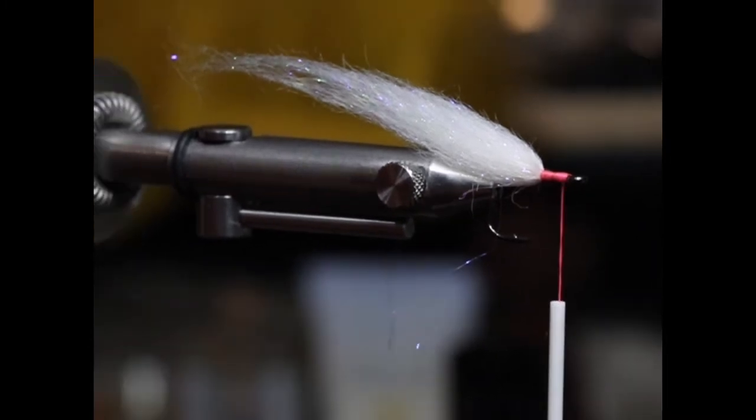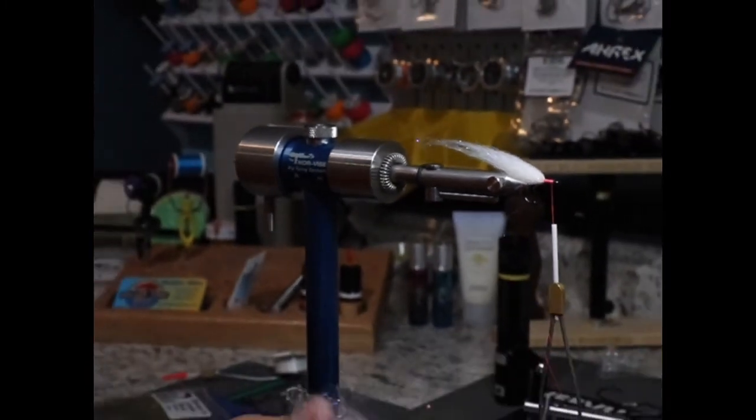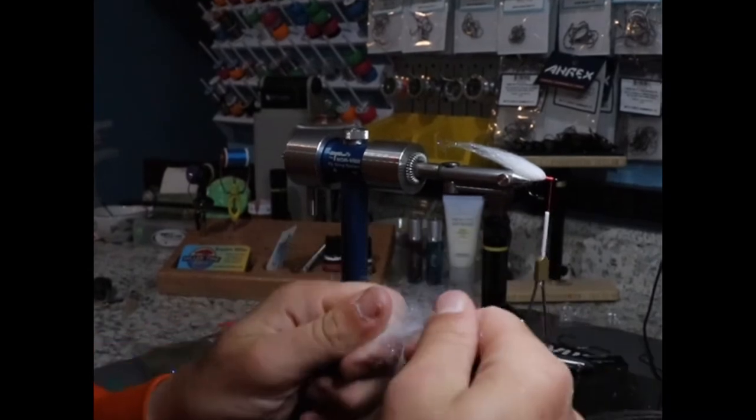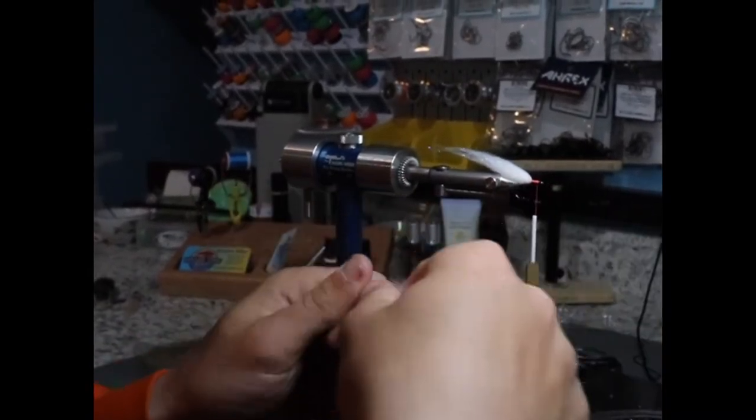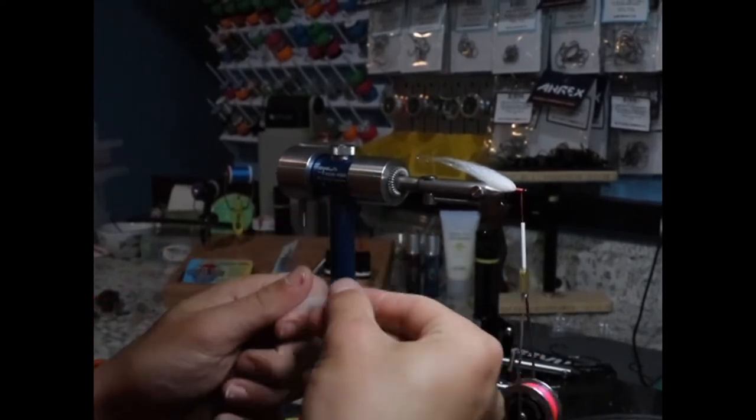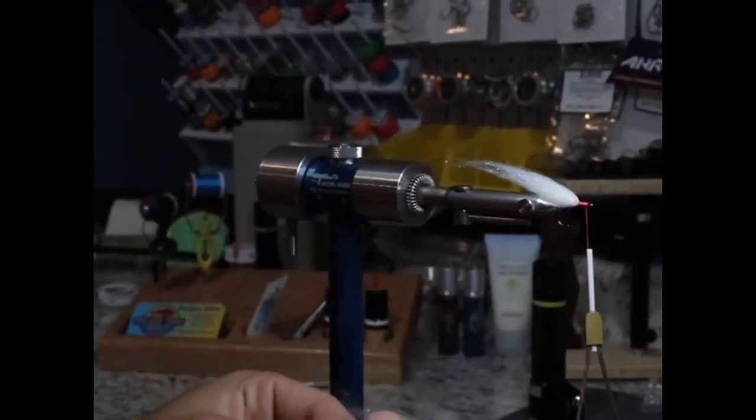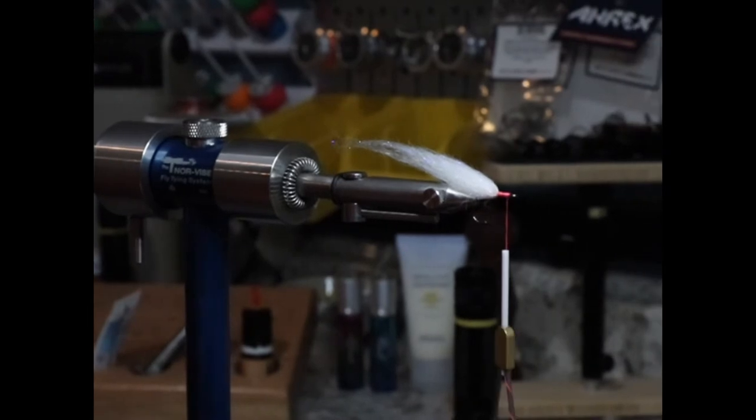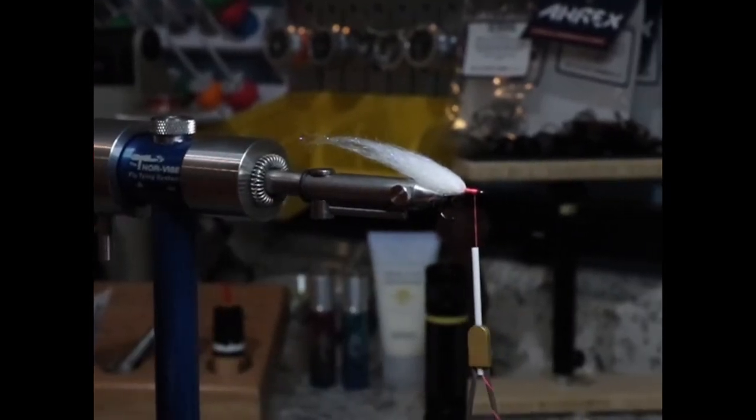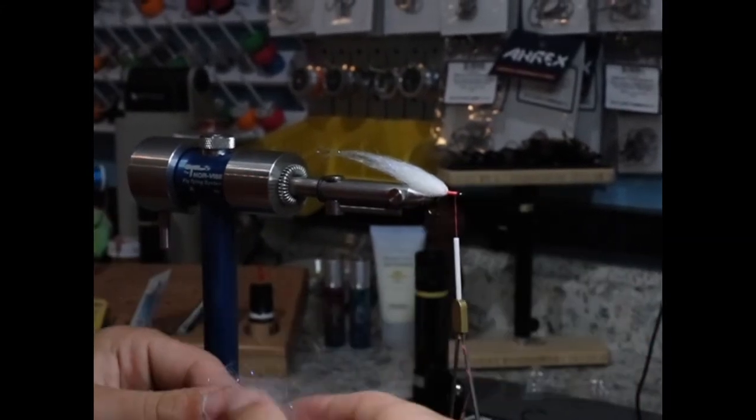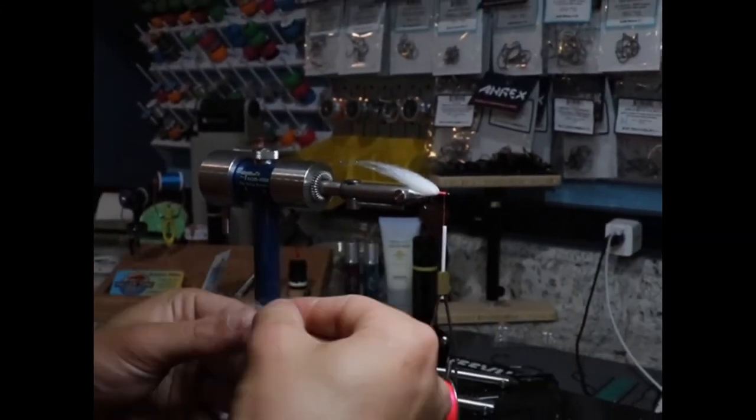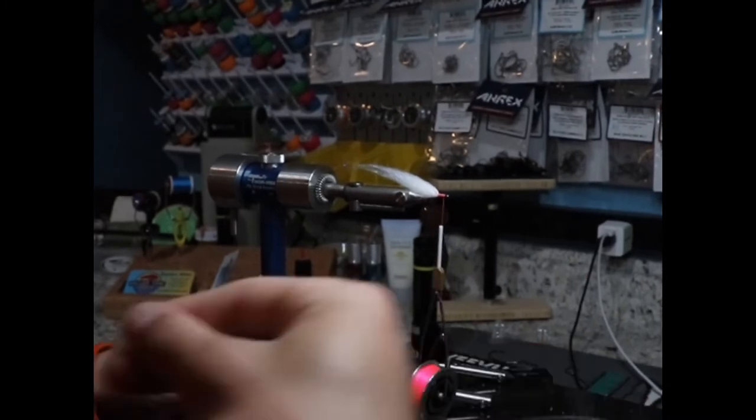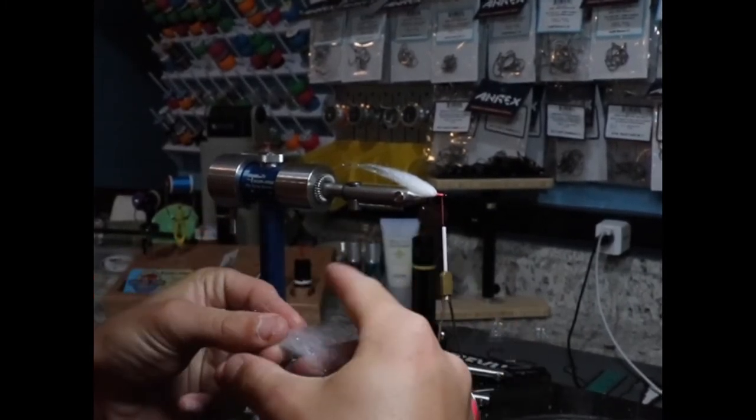Alright, so now, again, I'm just going to take some white Sineo's laser dub. This time, we're not going to be going around 360 degrees, but just on the belly. This fly is going to imitate an anchovy, small anchovy, silver side, any small bait fish that the false albacore will key in on. I've tied this fly straight white, olive over white, blue over white, hot pink, pink over white, chartreuse over white. I mean, the list goes on. You can tie them whatever. But my go-to is either all white or olive over white.